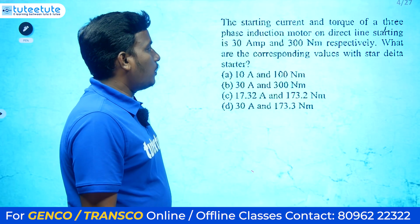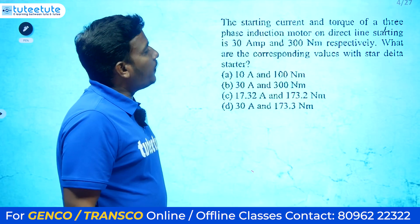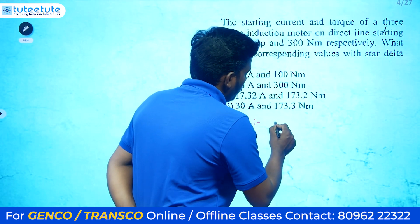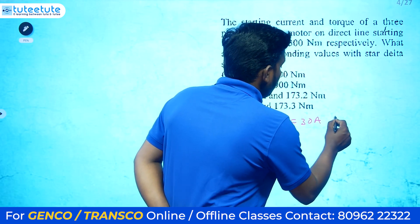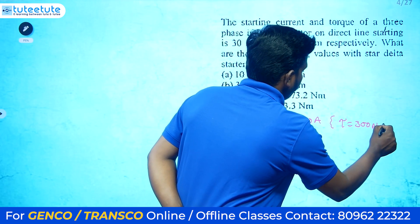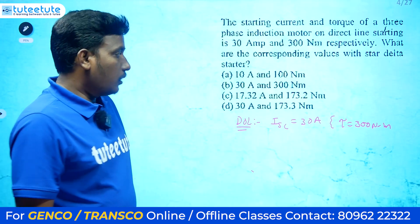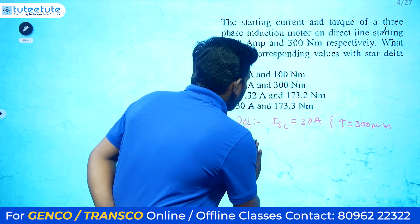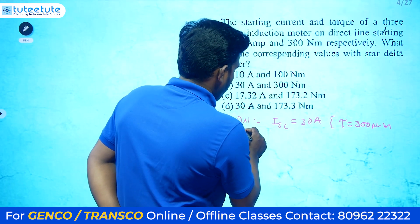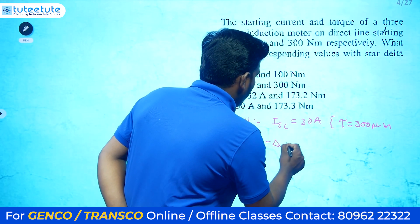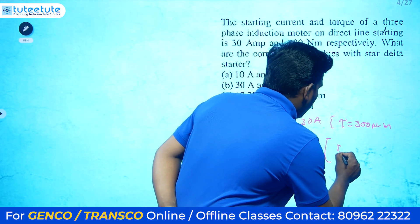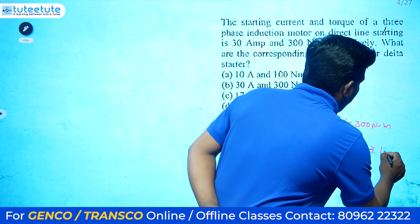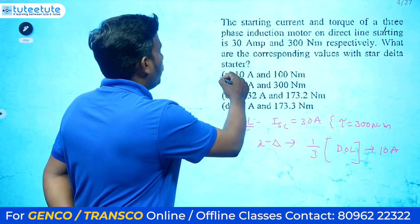Next question: the starting current and torque of a three-phase induction motor are 30 amps and 300 Nm — what are the corresponding values with a star-delta starter? The DOL starter values are: short circuit current = 30 A, torque = 300 Nm. In a star-delta starter, the current is reduced to 1/3 of the DOL value, so the current becomes 10 amps. By looking at the options, directly choose option A.